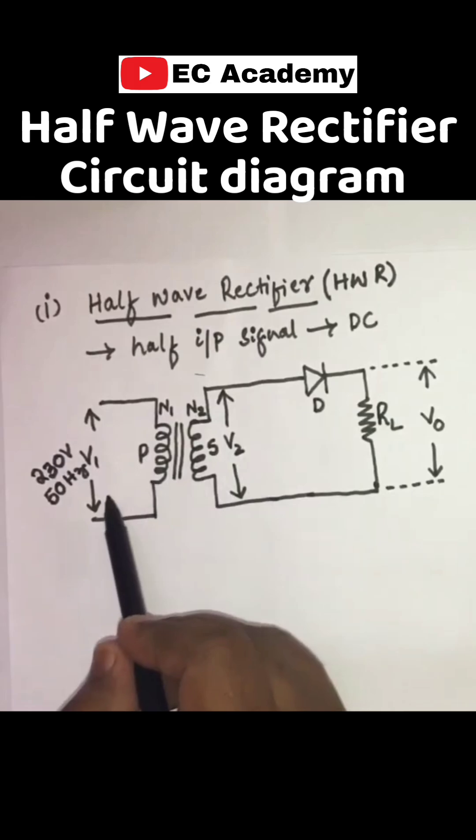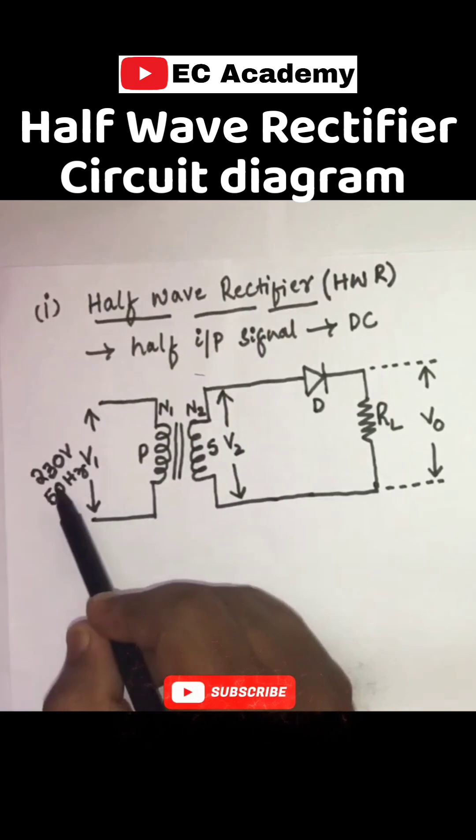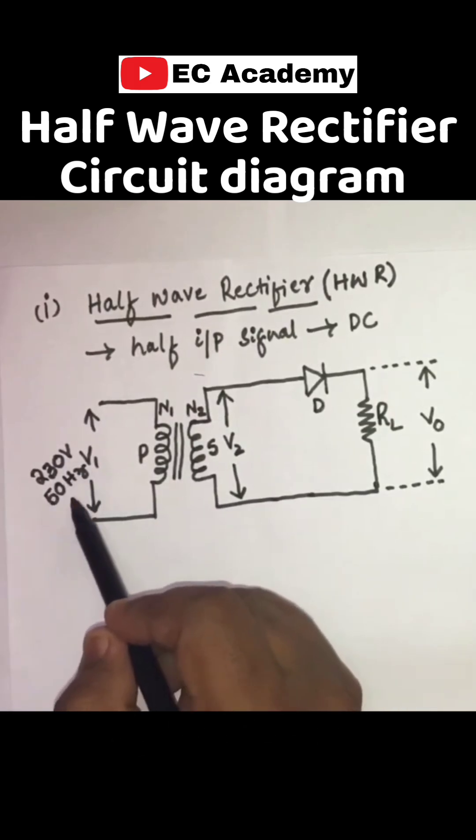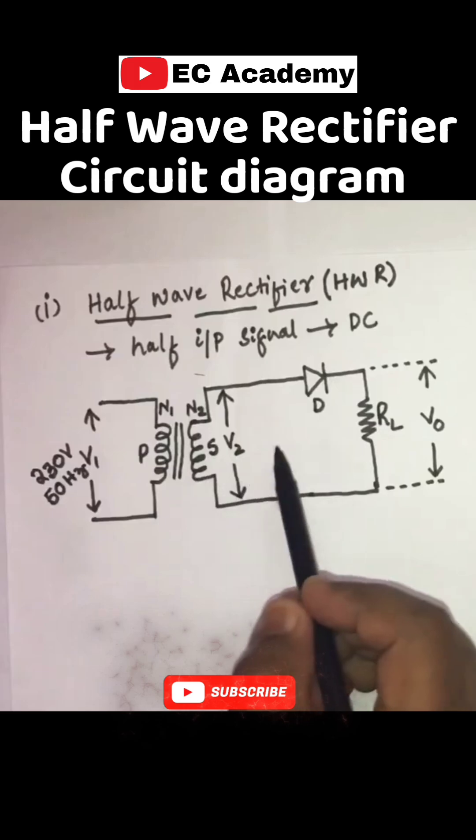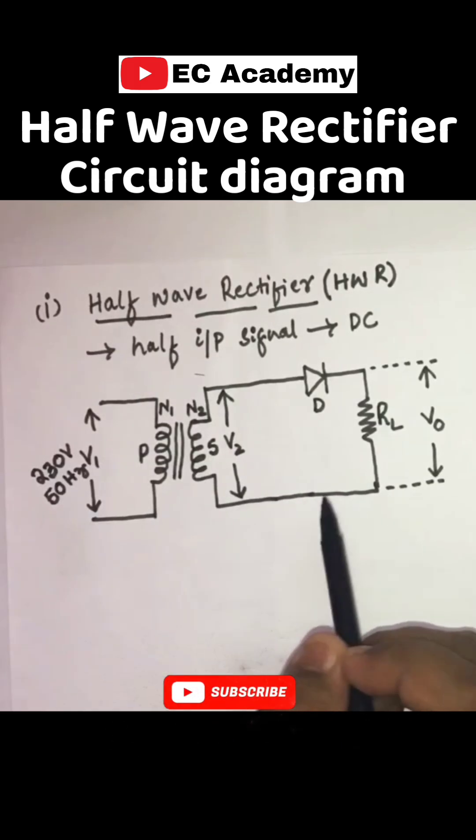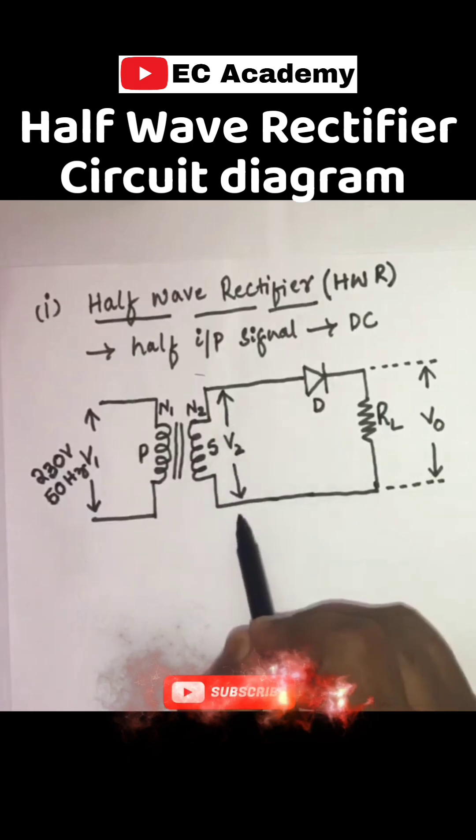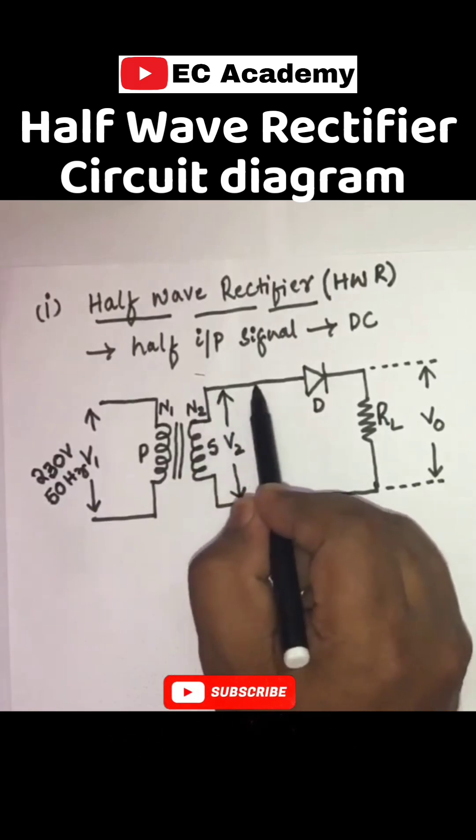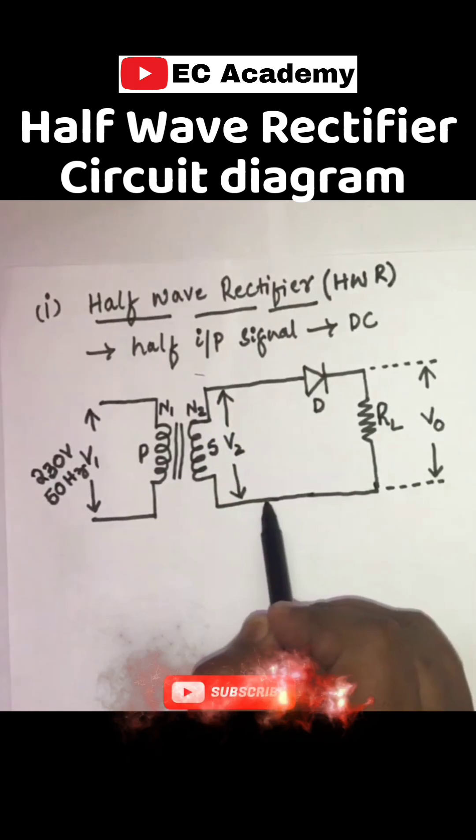Primary section is connected to the source voltage where we are getting 230 volts and 50 hertz. Secondary section of the transformer consists of three terminals, but in a half-wave rectifier, we are using only two terminals. You can see this is one terminal and this is another terminal.